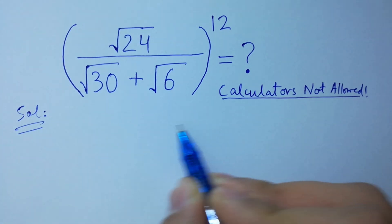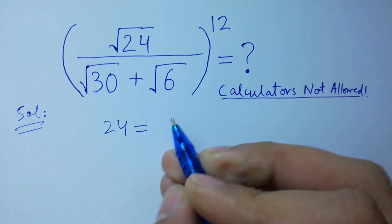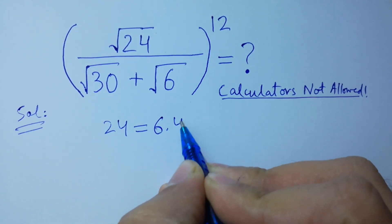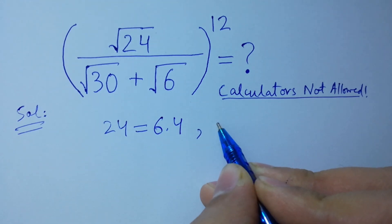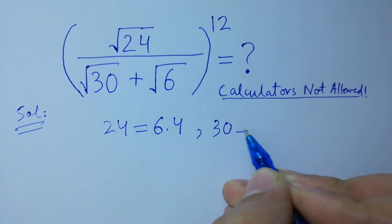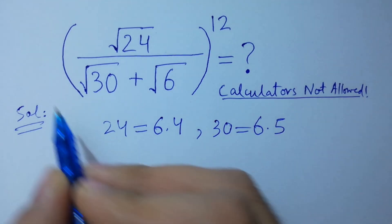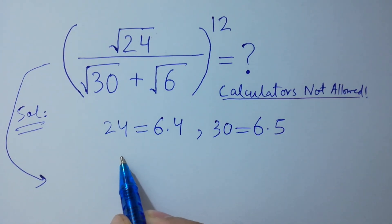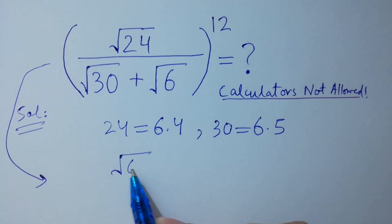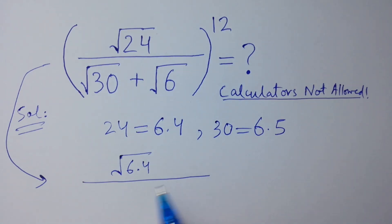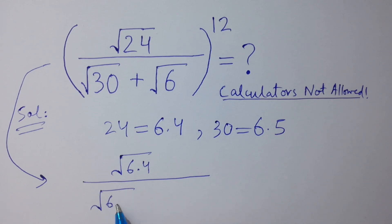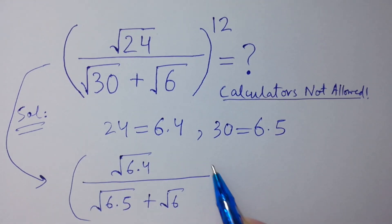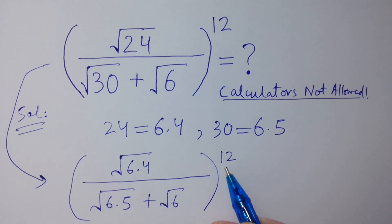Since 24 equals 6 times 4, and 30 equals 6 times 5, it will be equal to square root of 6 times 4, over square root of 6 times 5 plus square root of 6, to the whole power 12.